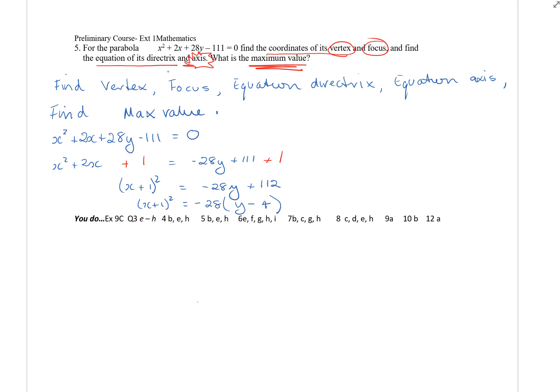So it says for this parabola find the coordinates of the vertex and the focus, and find the equation of the directrix and the axis, the equation of the axis, and what is the maximum value. When I read that and saw that it required that many things for the answers, I thought I'm going to write it down.